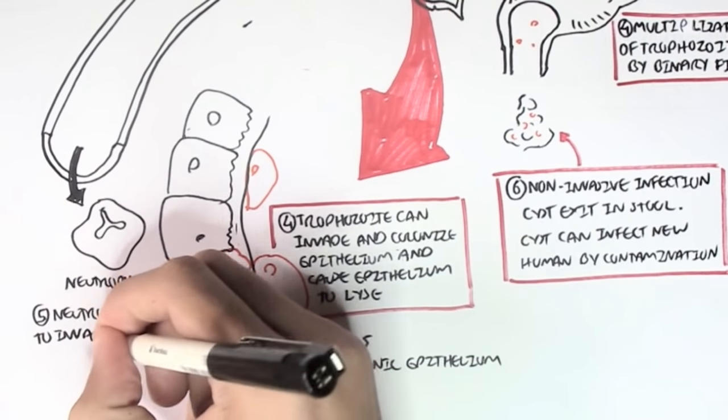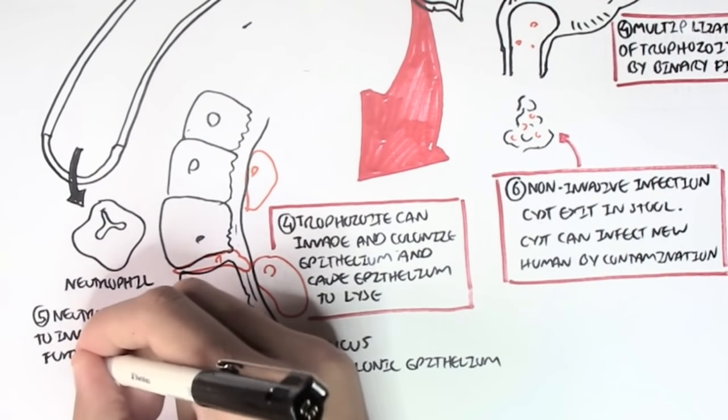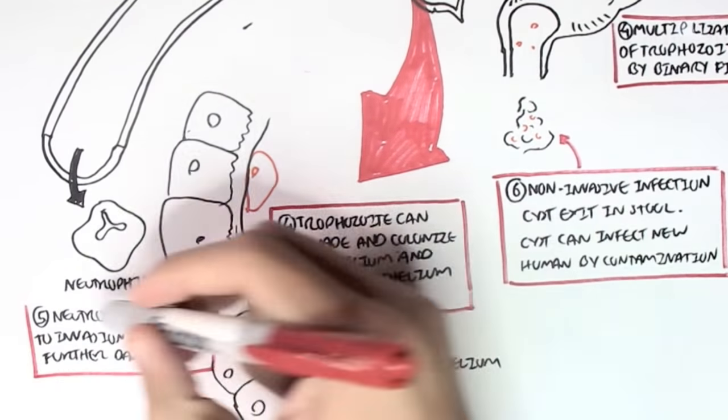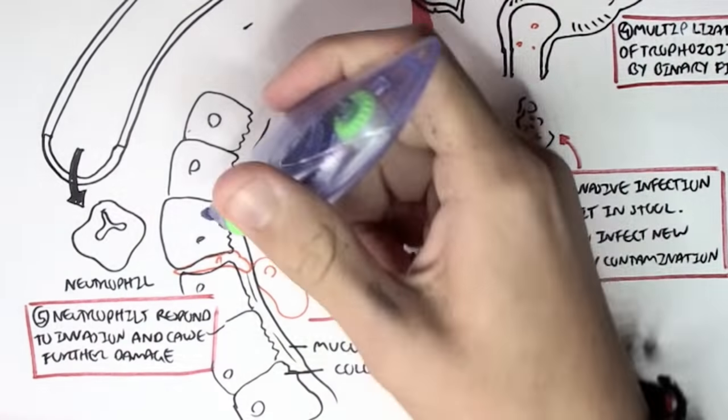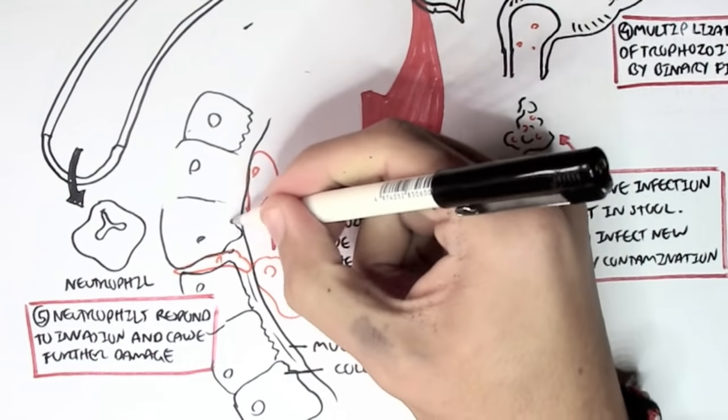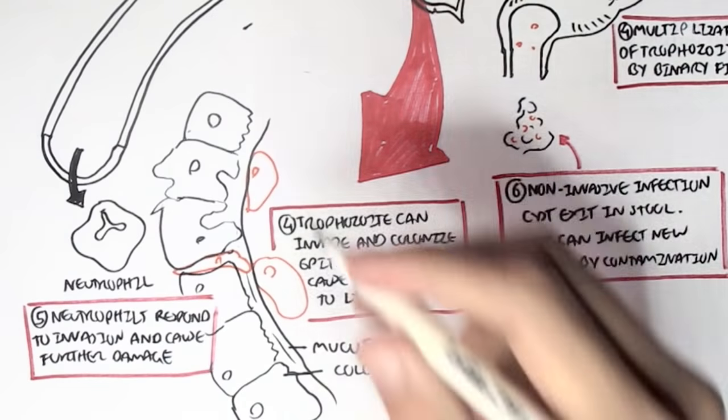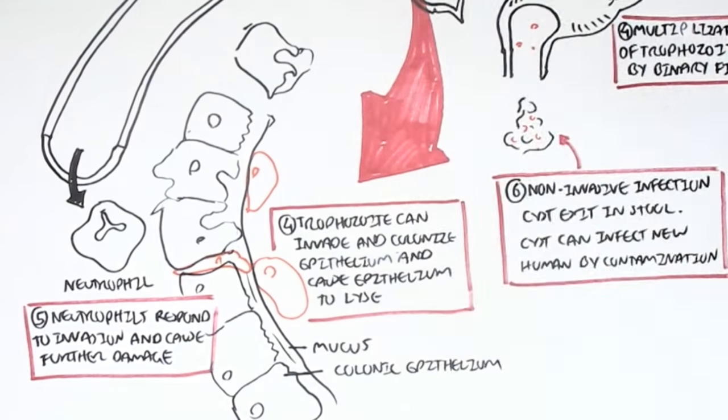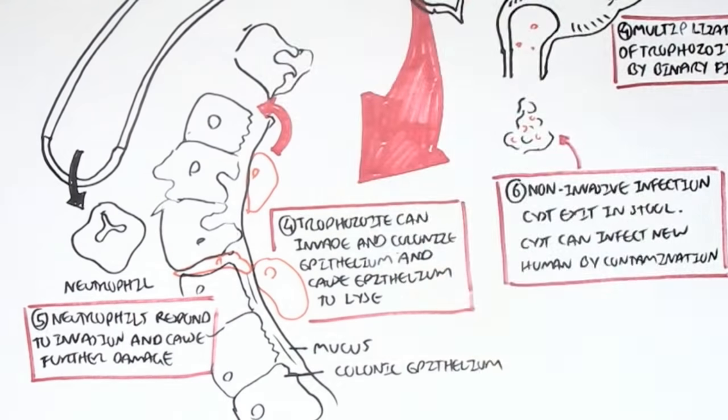Essentially, this will aggravate the whole process and will create ulcers, as you can see. The epithelials will start developing ulcers within the colon of the large intestines. And then it will just essentially damage this whole epithelial layer and mucus.